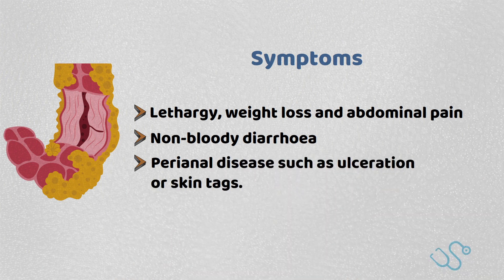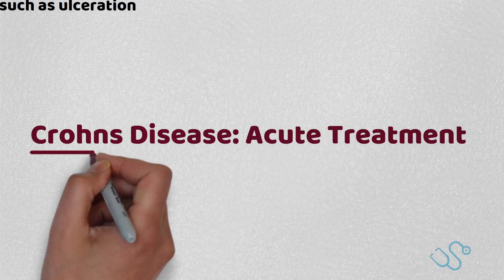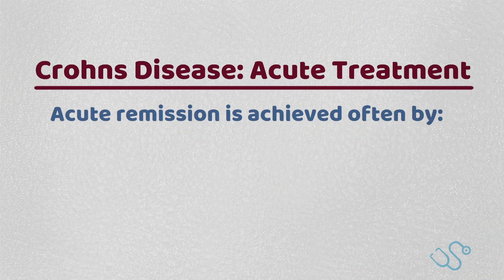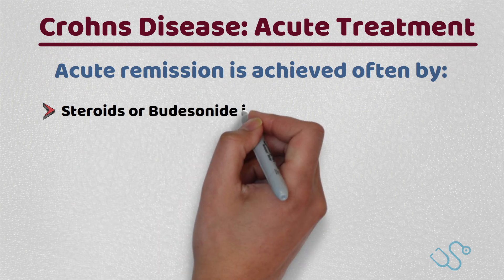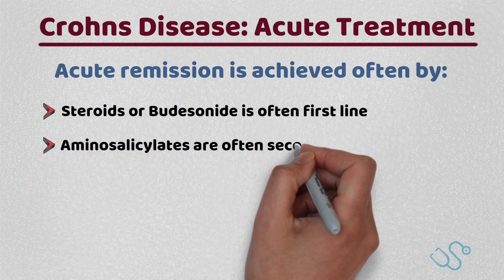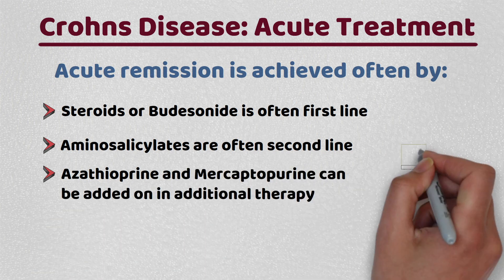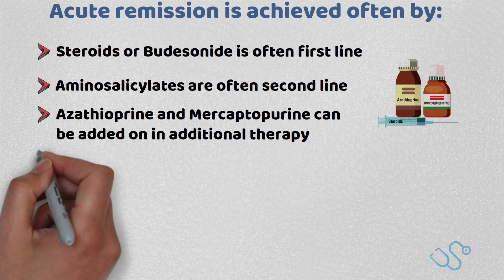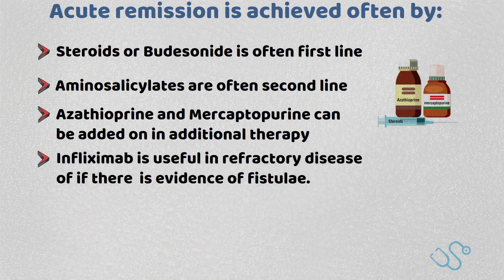The management of Crohn's disease is also slightly different to ulcerative colitis. Acute remission is often achieved by steroids or budesonide first-line. Aminosalicylates are often second-line, with azathioprine and mercaptopurine added on as additional therapy. Infliximab is useful in refractory disease, particularly if there's evidence of fistulae.